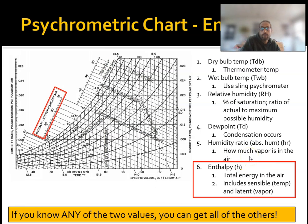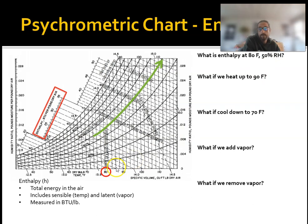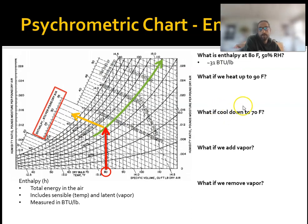Let's look at an example using the chart. How do we use the chart to figure out enthalpy? If we have a dry bulb temperature of 80°F and 50% relative humidity — there's our 50% line — where do they meet? You can see how this is sort of diagonal, and you use this line. Enthalpy is typically measured in BTUs per pound for English units — BTUs of energy per pound of dry air.